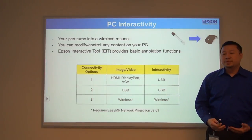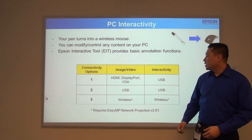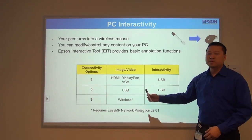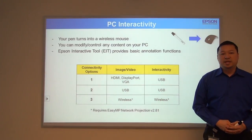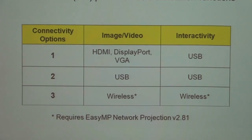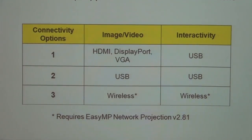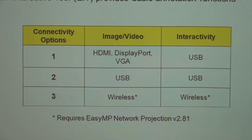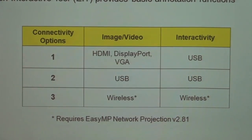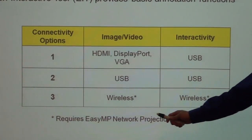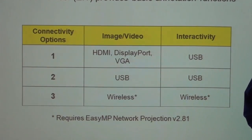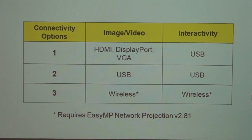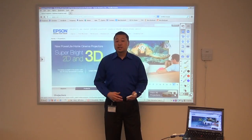The second option is to combine both signals — the video and the interactivity — in the same USB cable. The third option is to lose all the cables altogether and go wirelessly. But in order to do that, you're going to need Epson's EZMP network projection software version 2.81 or later.